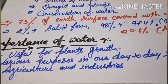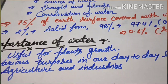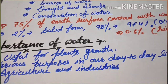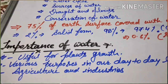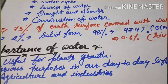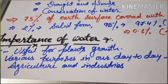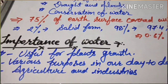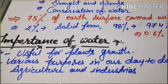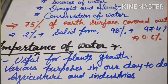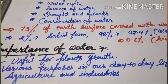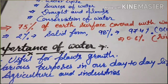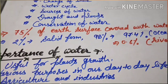Water is used for various purposes in our day-to-day life: for cooking, drinking, bathing, and washing. Water is also very important in agriculture — we need water to grow crops. Additionally, water is used in dams to generate electricity. So water is essential for daily life, agriculture, and industry.